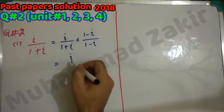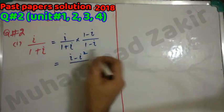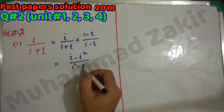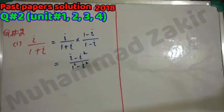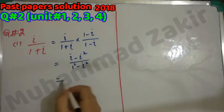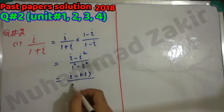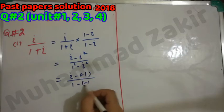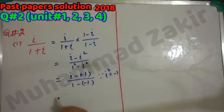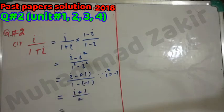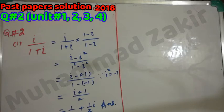The numerator becomes iota minus iota squared, denominator becomes a²minus b². Since iota squared equals minus 1, this gives (iota + 1) divided by 2, which is (1/2) + (1/2)iota. So 1/2 is the real part and 1/2 is the imaginary part.